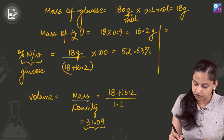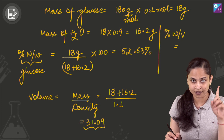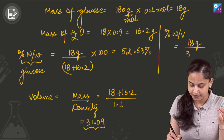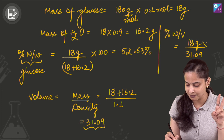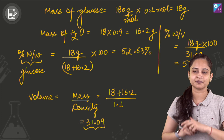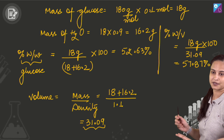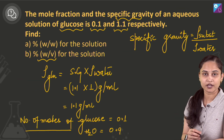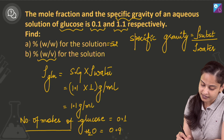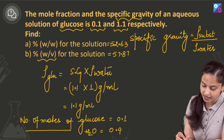To calculate percentage weight by volume, it is the amount of solute in grams — that is glucose — divided by the volume of solution in ml, multiplied by 100. That gives us 18 divided by 31.09, multiplied by 100, which comes out to be 57.87%. So our final answers: (A) percentage weight by weight is 52.63% and (B) percentage weight by volume is 57.87%.